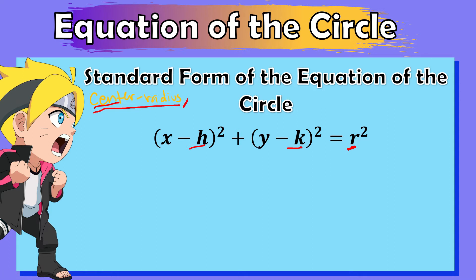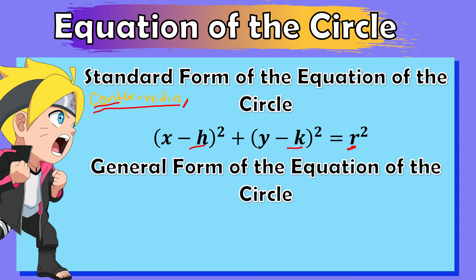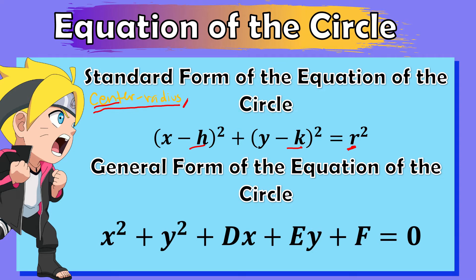Now for today's lesson, we will have the general form of the equation of the circle. Given the standard form — or given just the center and radius — we need to convert or transform that equation to the general form. The general form is: x squared plus y squared plus dx plus ey plus f is equal to zero, wherein d, e, and f are all constants or real numbers.